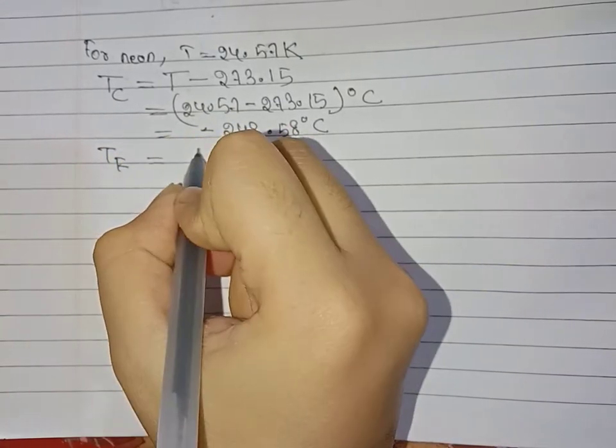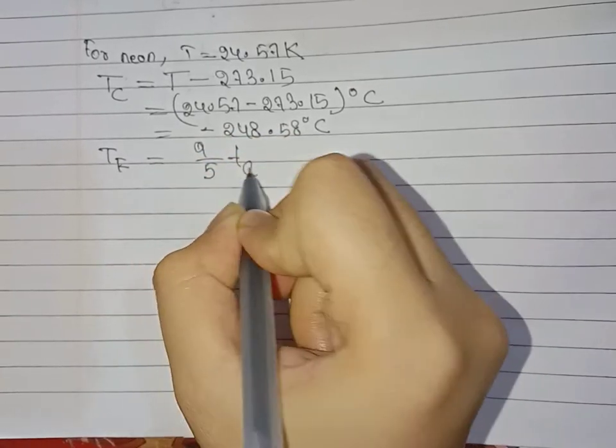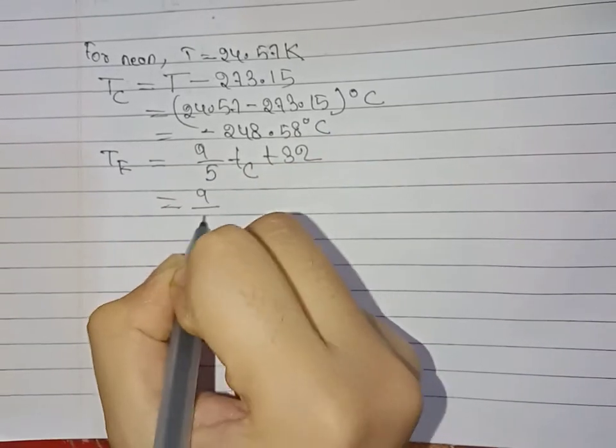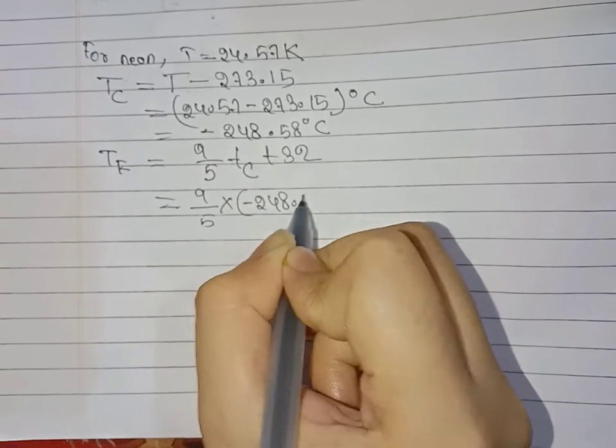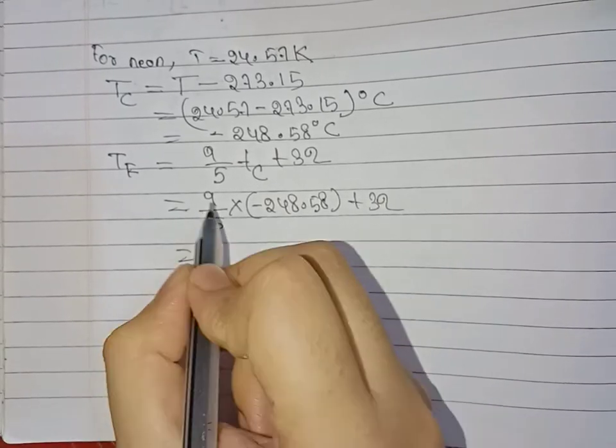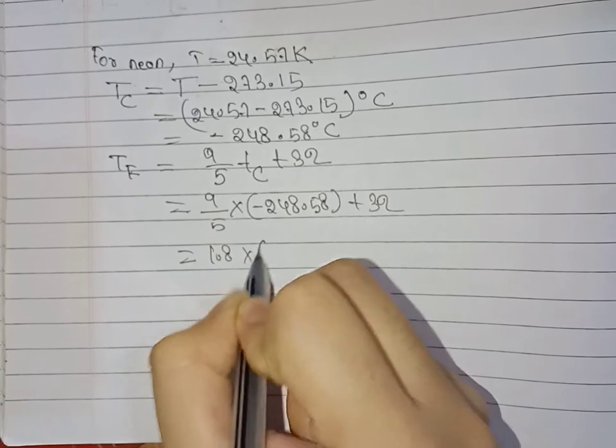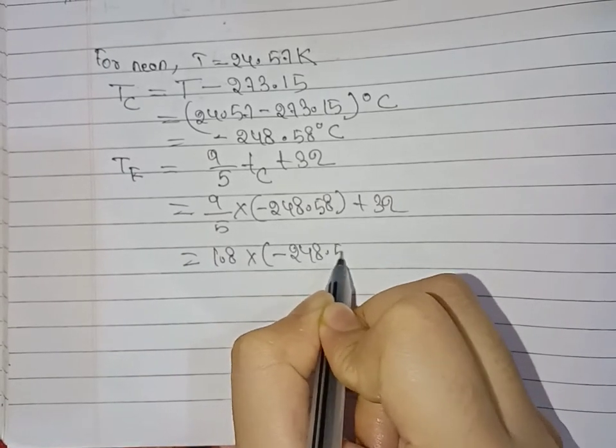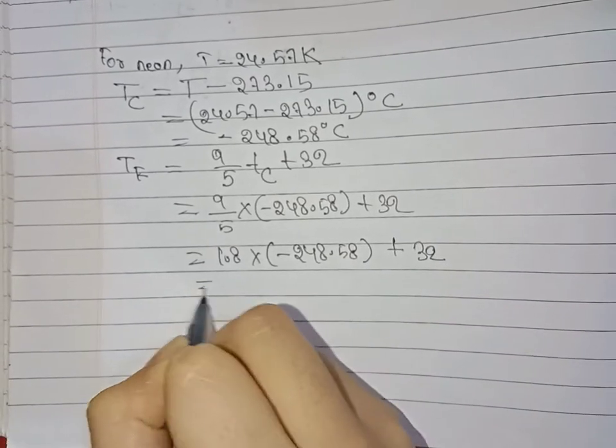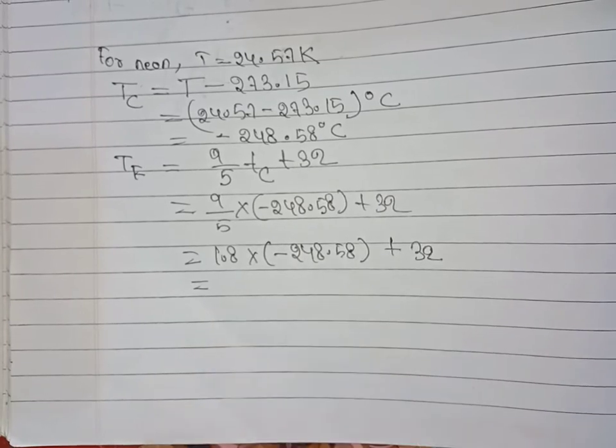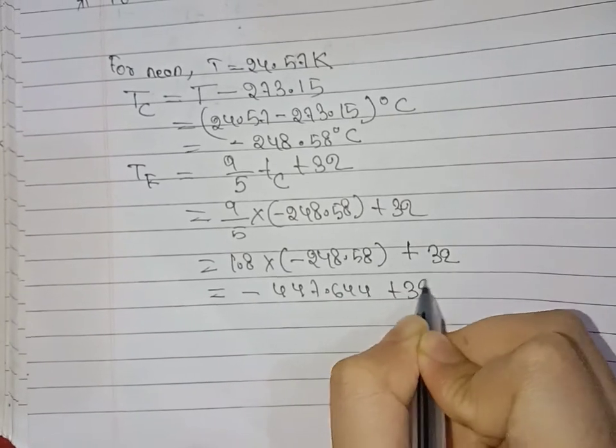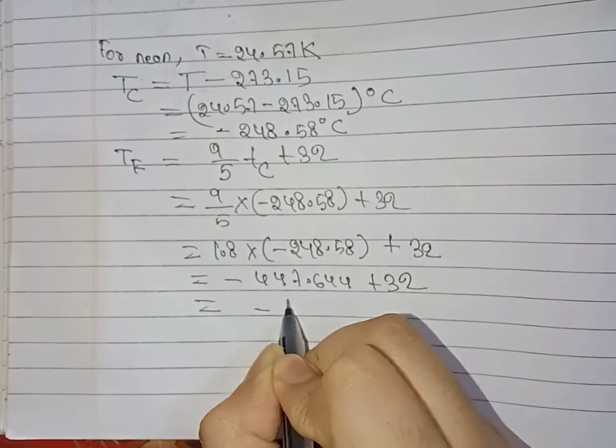To convert to Fahrenheit, the formula is 9/5 times the Celsius temperature plus 32. So 9/5 into minus 248.58 plus 32. 9/5 is 1.8, so 1.8 into minus 248.58 plus 32 equals minus 447.444 plus 32, which equals minus 415.644 degrees Fahrenheit.